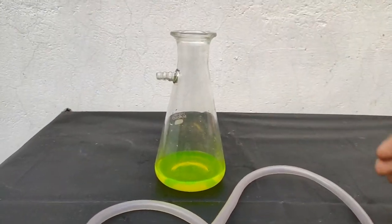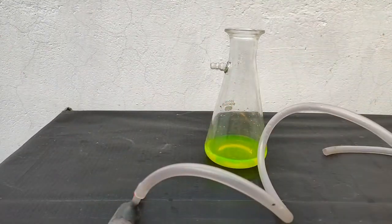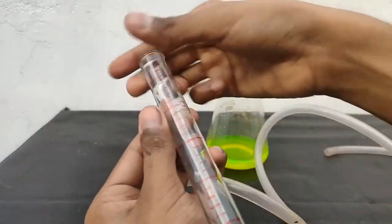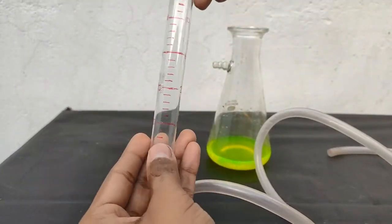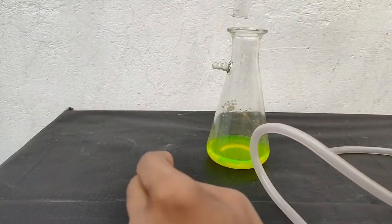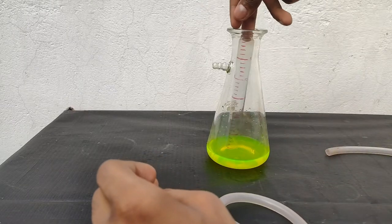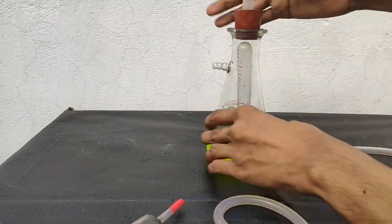Now over here I have taken some water to which a small amount of fluorescein is added in a filtration flask. Then I took a graduated test tube and placed it inside the flask in an inverted position.